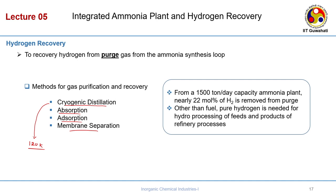For example, in our region we have the Brahmaputra cracker plant, which separates C2 and C3. Ethylene and propylene are very useful raw materials for polymers such as HDPE, LDPE, or polypropylene, so they have to be removed from natural gas. There are many steps involved and they use cryogenic distillation.